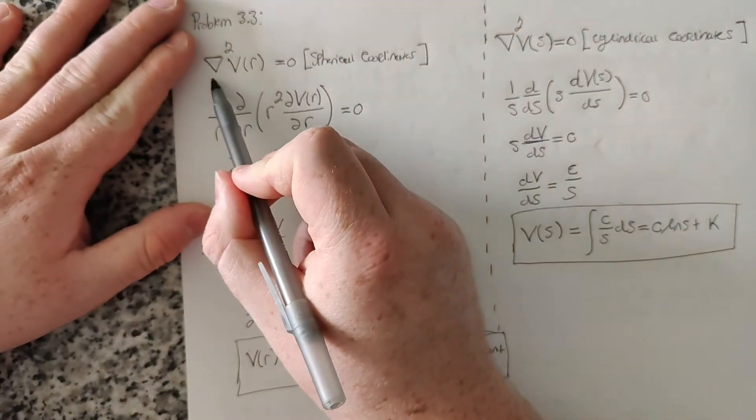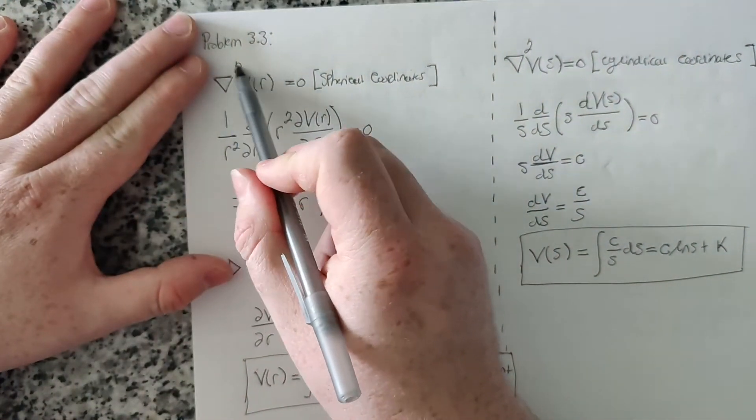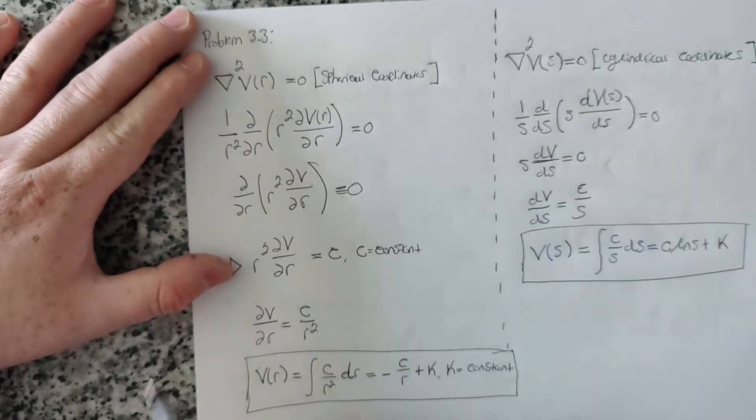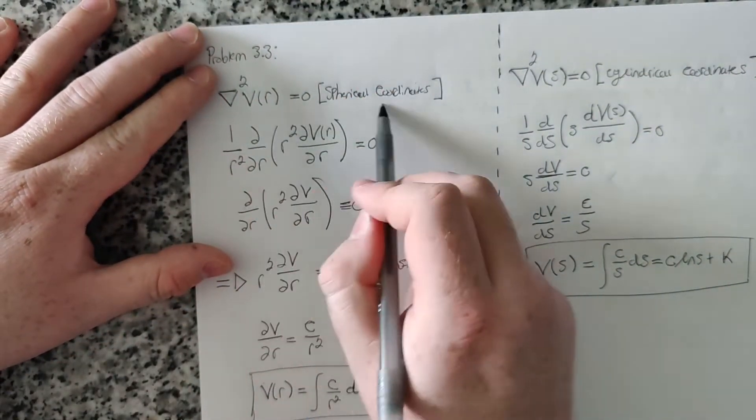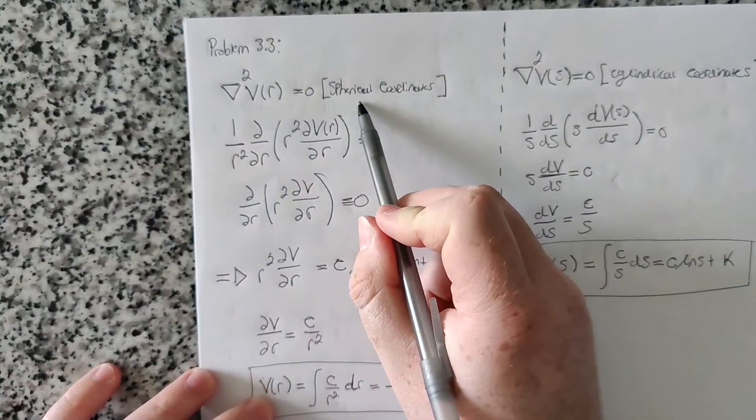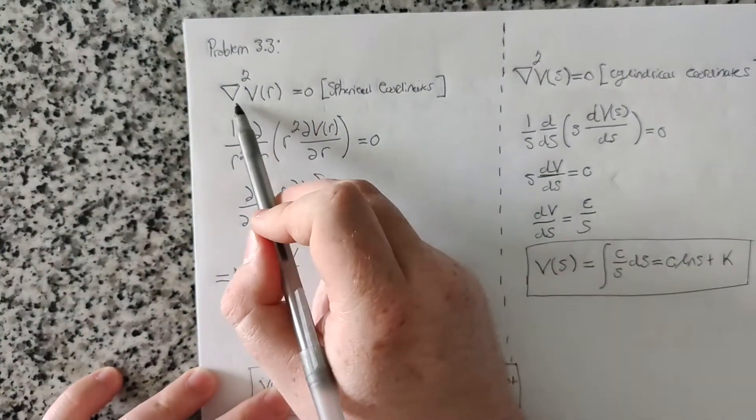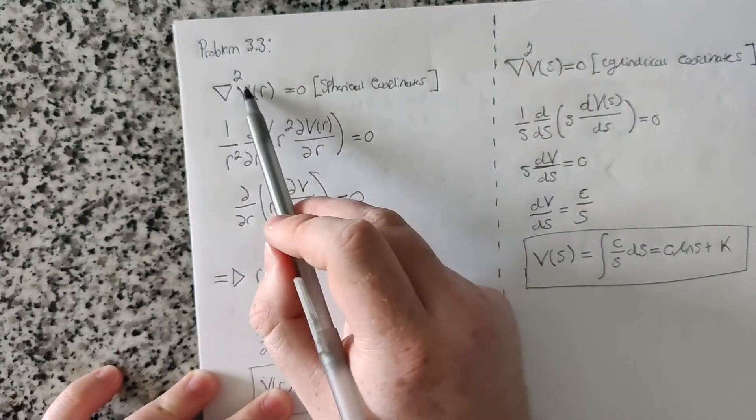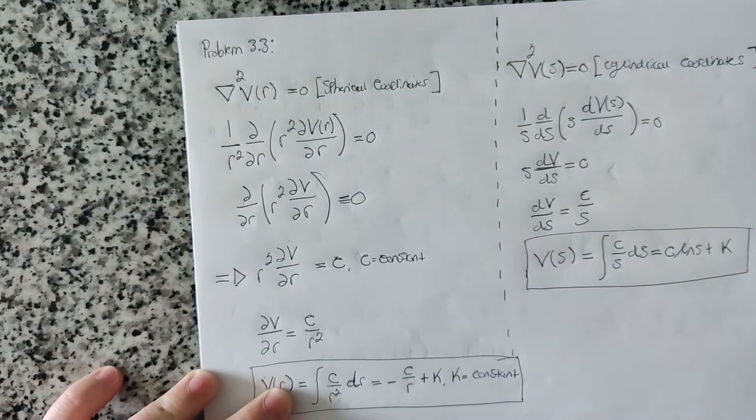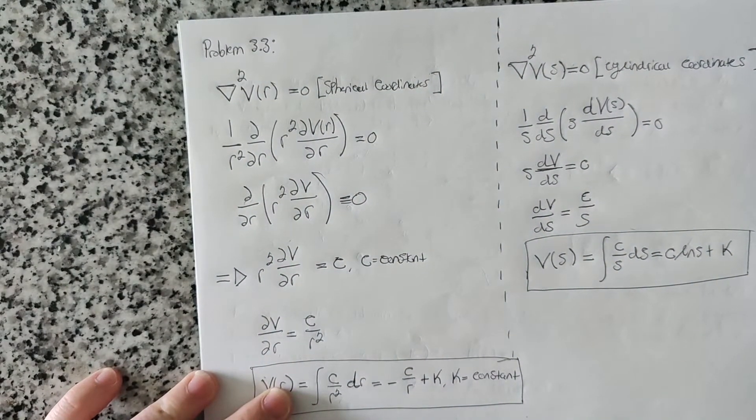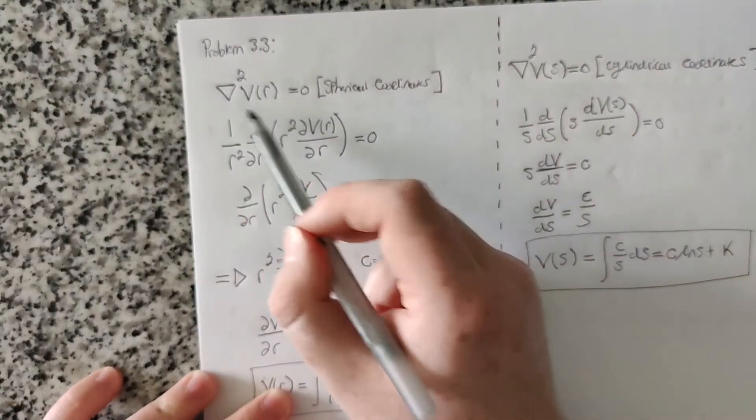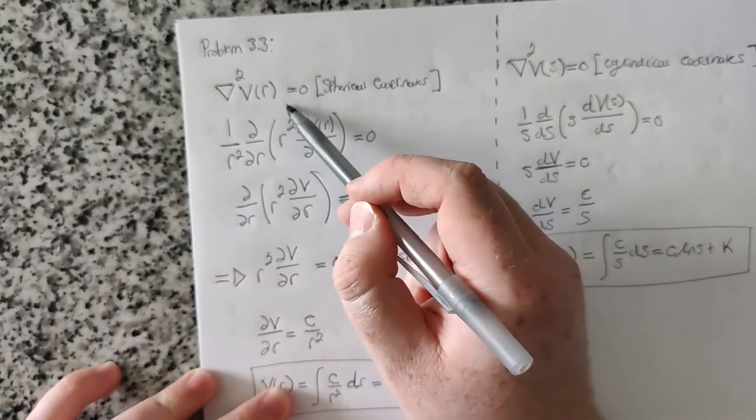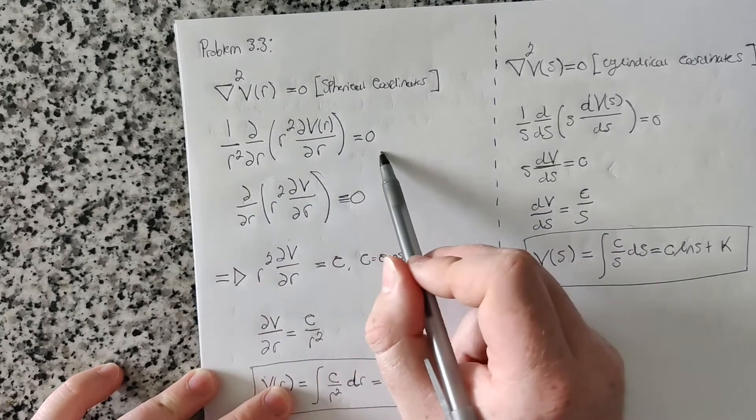So first of all, Laplace's equation, of course, is that the Laplacian of the potential is equal to zero. And so I've written the potential as a function of R here. And if you look in the front cover of Griffiths' book, you can find that the Laplacian of a function in spherical coordinates can be written like this.